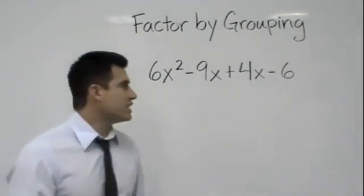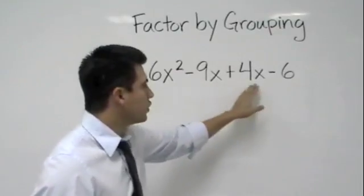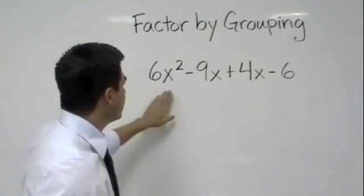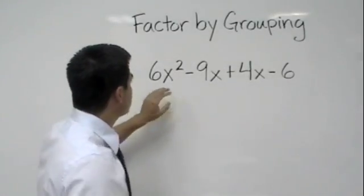Factoring by grouping. The main thing we want to see here is to always see if there's four terms. That's one key thing that you always want to remember, so I would write that down. Put four terms. There always has to be four terms.